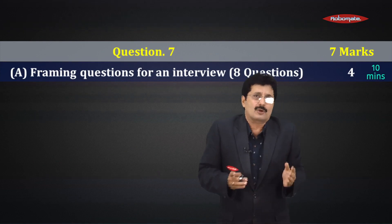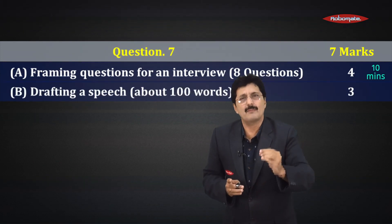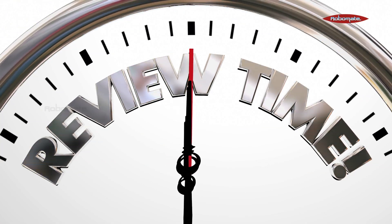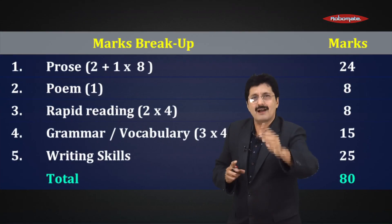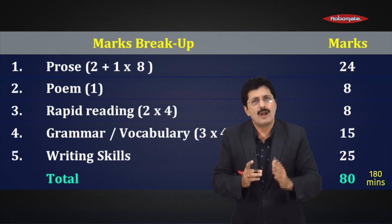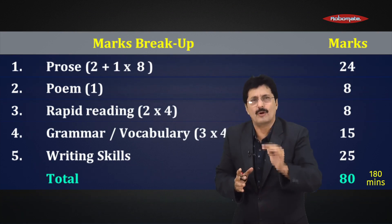Which leaves us with question number seven A: interview writing for four marks, 10 minutes. And question number seven B for three marks, again 10 minutes. Finally, review, review, recheck, 15 minutes. So here we are, 80 marks in 180 minutes.